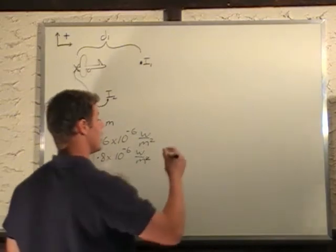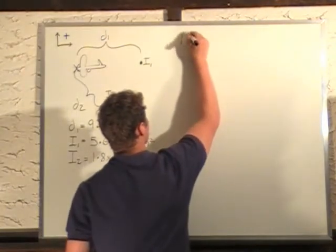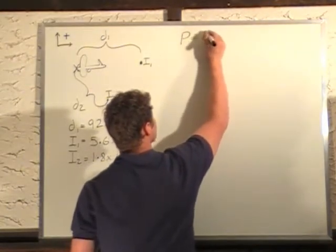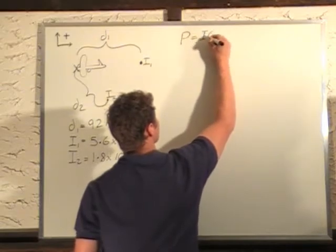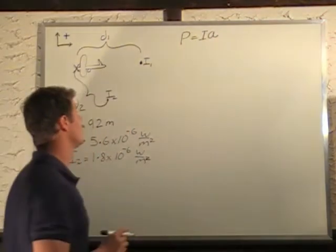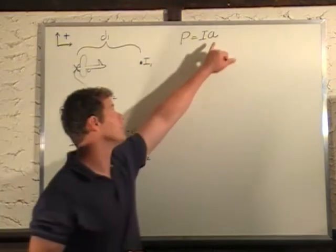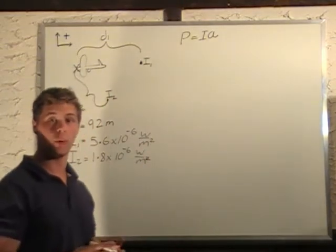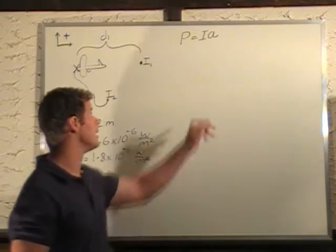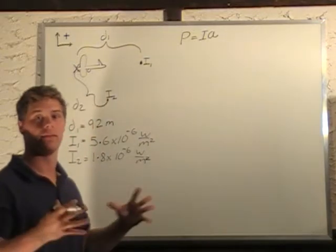Power, intensity, and area are related by the formula power equals intensity times area. So the area of the shell times the intensity at any given point on that shell is equal to the power, the total power of that shell. We have this increasing bubble.